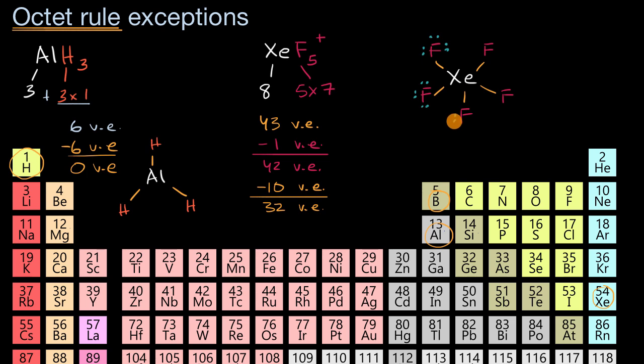And that fluorine gets six valence electrons, and that fluorine gets six valence electrons. And then last but not least, this fluorine gets six valence electrons. So I've just given away six valence electrons to each of five fluorine atoms, so that is 30 valence electrons that I have just allocated.